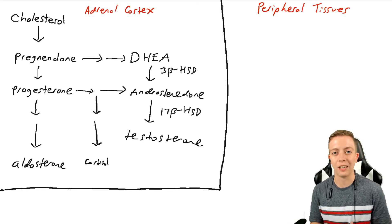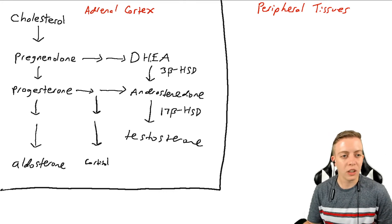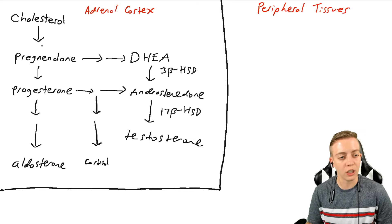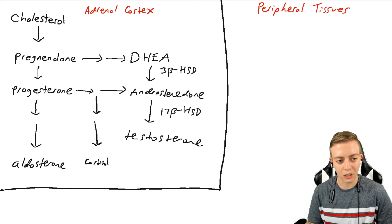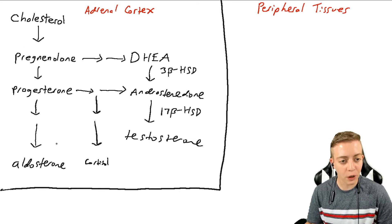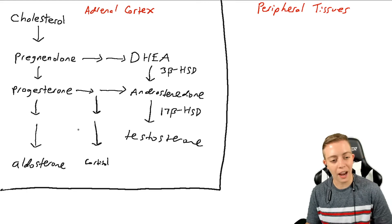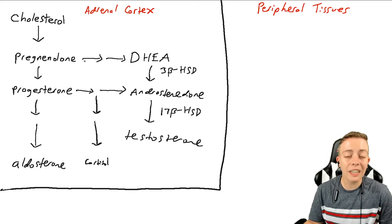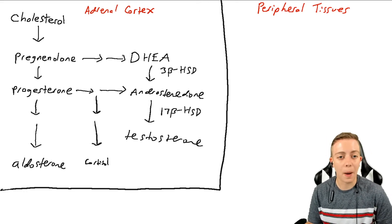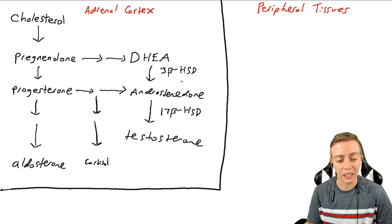Looking at this image, we have cholesterol that is converted to pregnenolone, which is converted to progesterone, and so on to aldosterone. Similarly we have cortisol, but what we really care about today are DHEA, androstenedione, and testosterone, because these are our androgens.